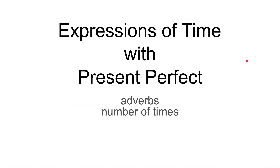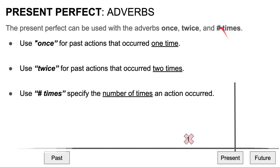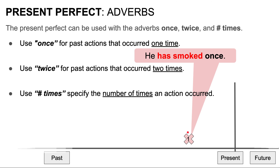Now we're going to look at adverbs that specify the number of times an action occurred. The present perfect can be used with the adverbs once, twice, and number of times. We use once for actions that occurred one time. For example, he has smoked once. We use twice for actions that occurred two times. For example, he has been to France twice. And we use number of times to specify the number of times an action occurred. For example, she has called me five times.